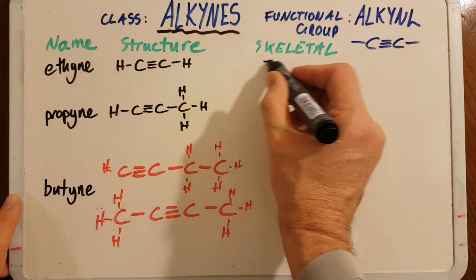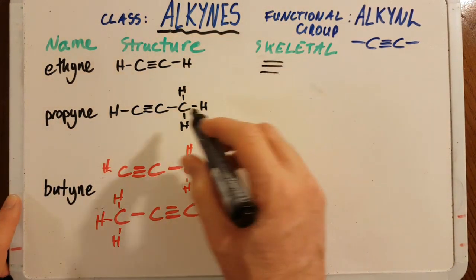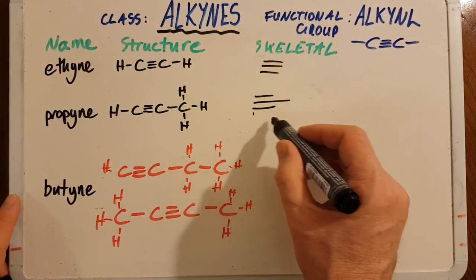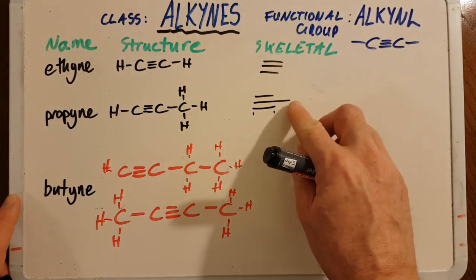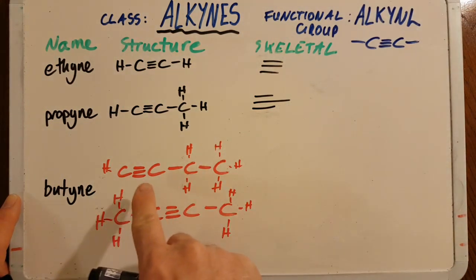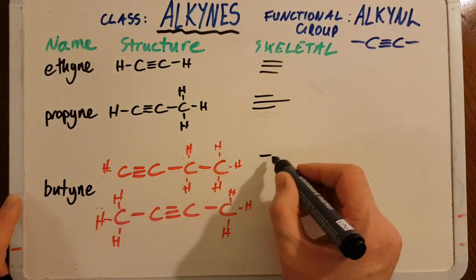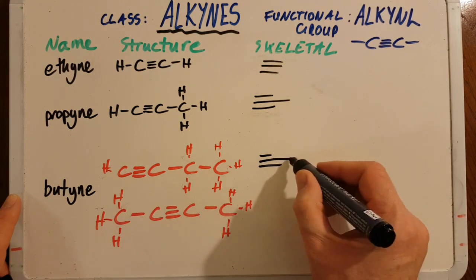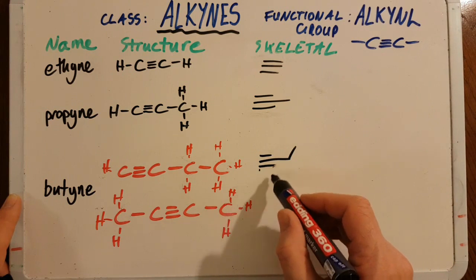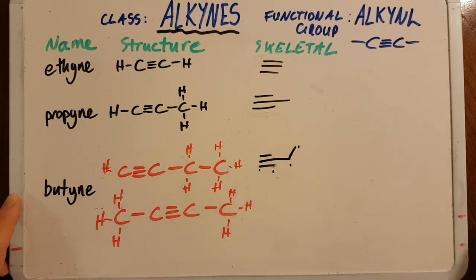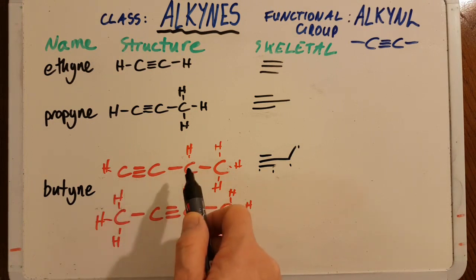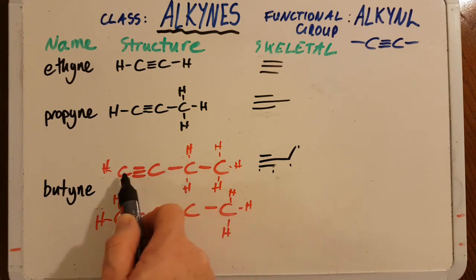This is ethyne. Propyne, there's one, two, three carbons there, so try and keep it straight. 1-butyne is like that, one, two, three, four carbons. This is straight, this is locked into a straight line with these other two.